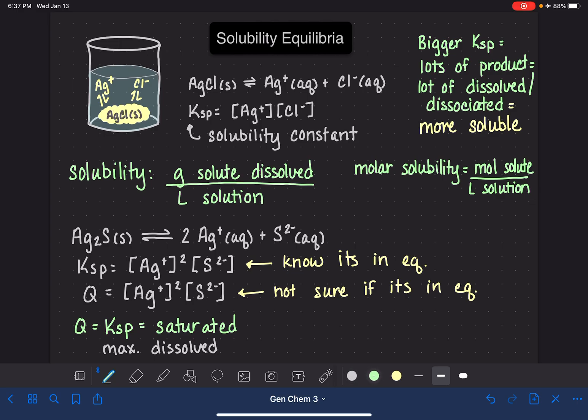If we calculate Q and Q ends up being less than KSP, that just tells us that the solution is unsaturated. If Q is less than KSP, we have not quite enough of our products. So that means that it's not all the way done being dissolved or dissociated. So it's got a little bit more to go.